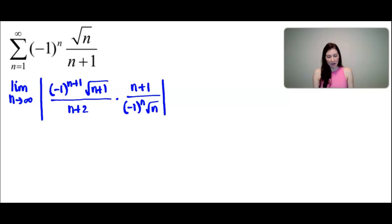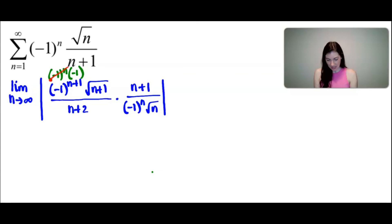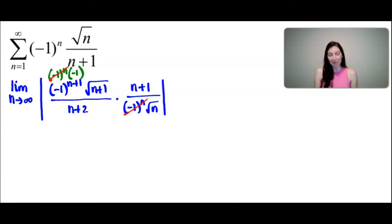Now thinking about how to simplify. I can rewrite (-1)^(n+1) as (-1)^n times (-1). Once I do that, the (-1)^n in the numerator and (-1)^n in the denominator cancel. Not too much simplifying here compared to the other examples, but it helps a bit.